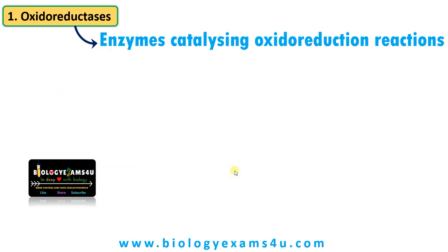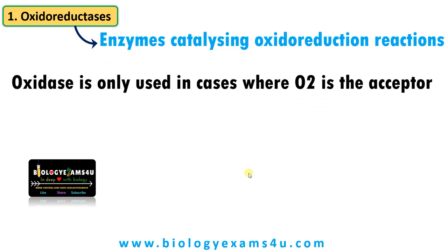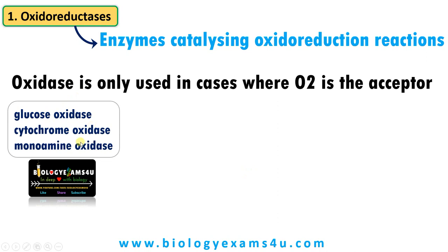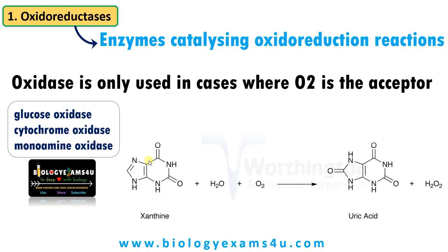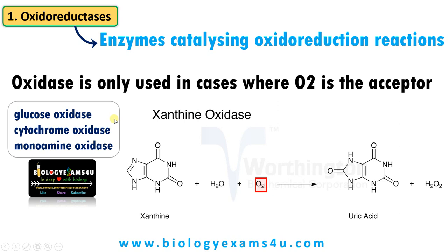Hope this much is clear. Let's take one more example. The term oxidase is used in cases where oxygen is the acceptor, like glucose oxidase, cytochrome oxidase, monoamine oxidase — all are examples of oxidoreductases. Take the case of xanthine oxidase, where xanthine is oxidized to form uric acid. Here oxygen is the acceptor, therefore the term oxidase should be used as per the nomenclature committee. So if an enzyme is named as oxidase, it suggests that oxygen is the acceptor.